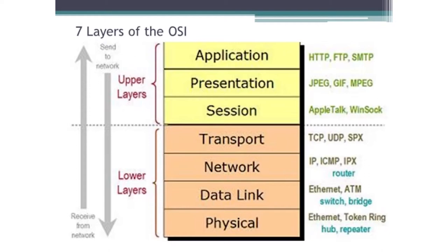They didn't want to pay the royalty fees. So SPX and, at the network layer, IPX were some other examples of transport layer protocols. Another one you'll come across in Windows is UDP — the user datagram protocol.